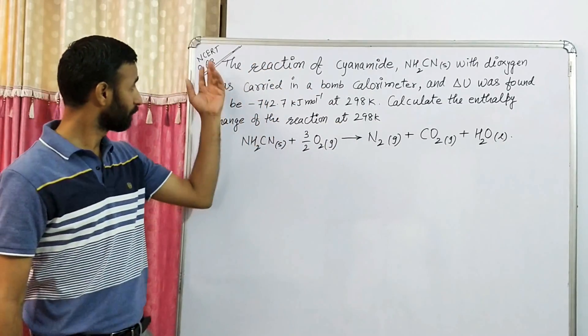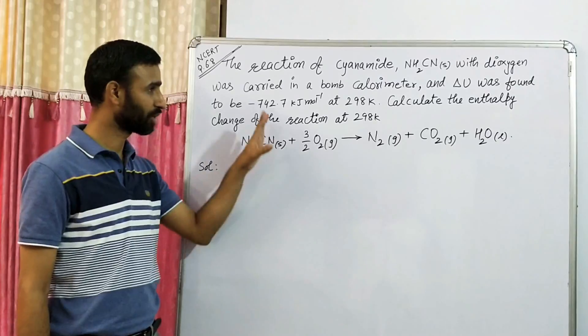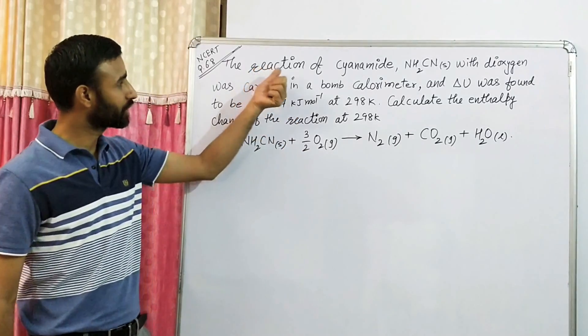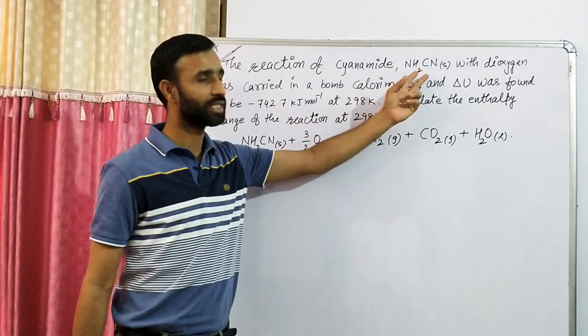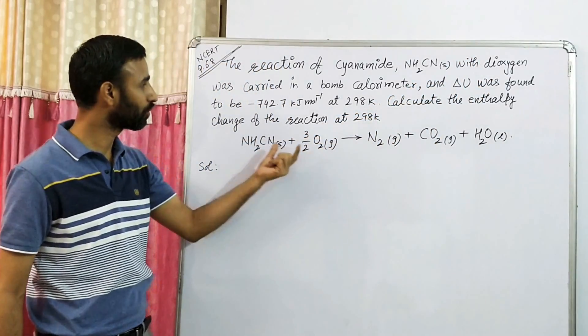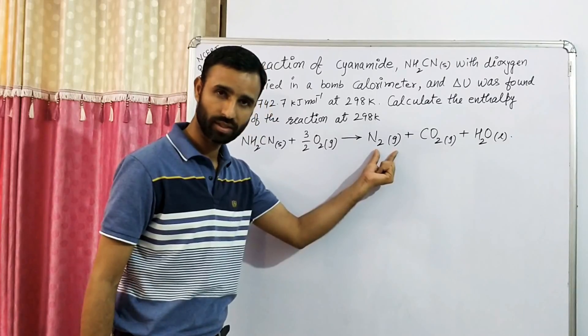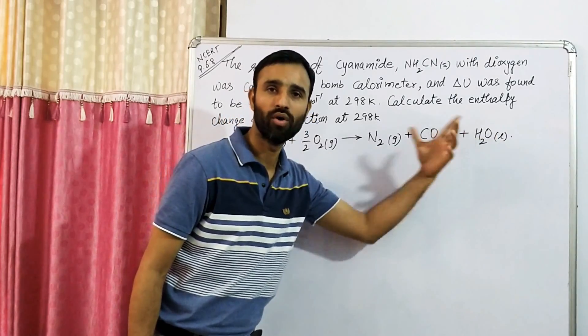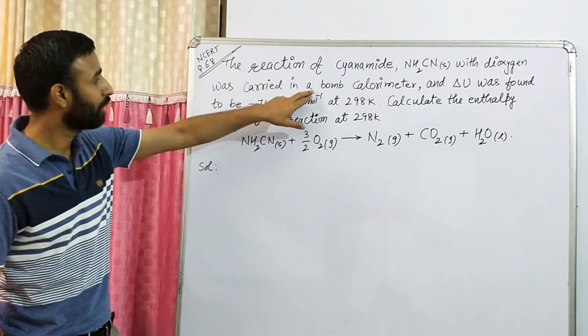This is question 6.8 from thermodynamics. The reaction of cyanamide, NH2CN solid, reacts with dioxygen to give nitrogen gas, CO2 gas, and H2O liquid in a bomb calorimeter.